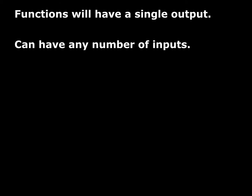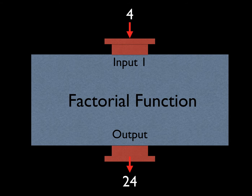Functions always have a single output regardless, but there can be any number of inputs. The most common examples are functions with one or two inputs. Addition, subtraction, multiplication, and division are all two-input functions. An arithmetic function with one input would be the factorial function — four factorial is one times two times three times four; six factorial is one times two times three times four times five times six, symbolized with an exclamation point. That's a function that takes one input and produces one output.